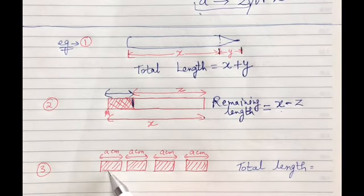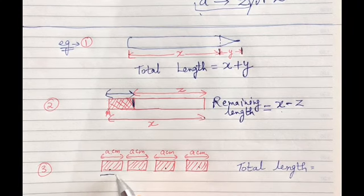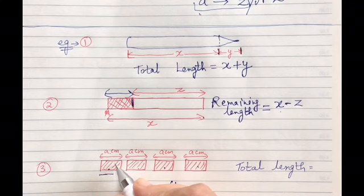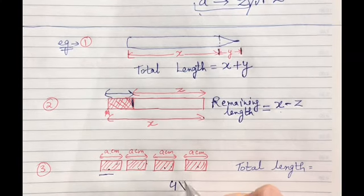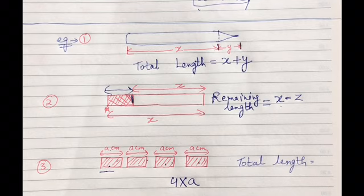Now you have small boxes of A centimeter. So if we add all of these together, what value will we get? It will be 1, 2, 3, 4, so 4 multiplied by A. So this is the total value or total length of all these boxes.